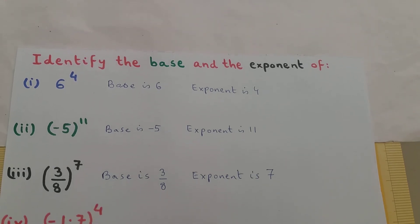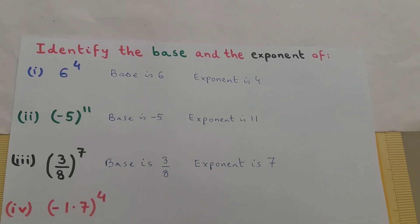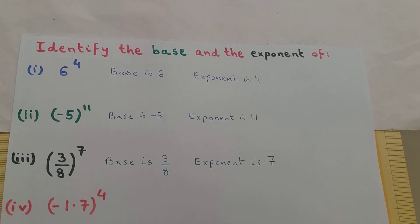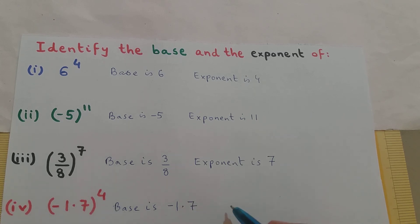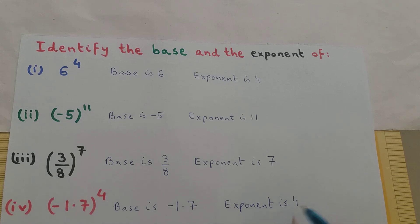Let us go to the next expression. Identify the base and the exponent of minus 1.7 whole raised to the power of 4. So what is the base and the exponent of this expression? The base of this expression is minus 1.7 and the exponent of this expression is 4. So this is how you solve such kind of questions.